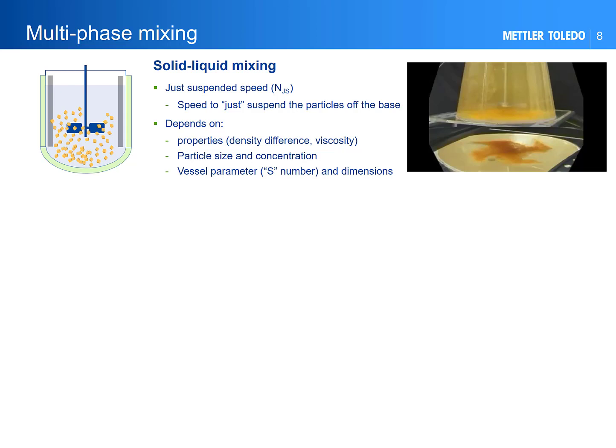Multi-phase mixing is a large area; I'm just going to show our most common applications here. For solid-liquid systems we calculate the just-suspended speed, which is the speed to just lift the particles from the base. This allows their surface area to be exposed for reaction or crystallization. The photograph on the right shows a vessel viewed from both the side and the bottom — you can see that the particles sitting on the bottom are not suspended. Lack of suspension can lead to long reaction times which can have adverse quality effects; for instance, you get more impurity production on scale if the reaction time is extended.